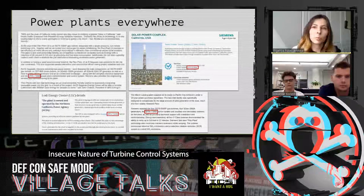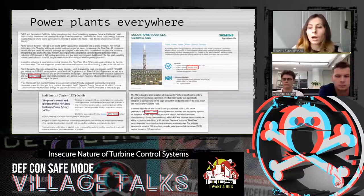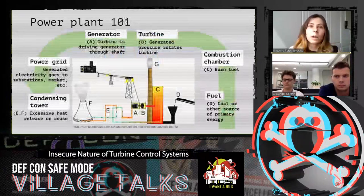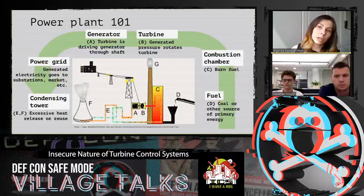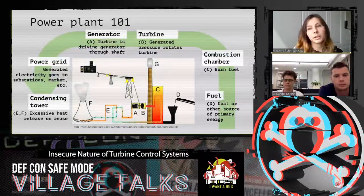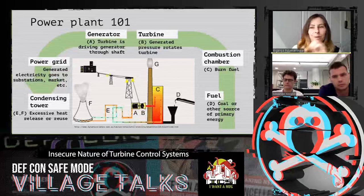Before we move on to power plant generation automation, let's talk a little bit about the power generation process in general — what we are going to automate. Here and throughout the presentation we will be intentionally oversimplifying a lot of things, partially to make them more suitable for the audience, and partially because, to be honest, we don't fully understand them ourselves. So let's go from right to left.